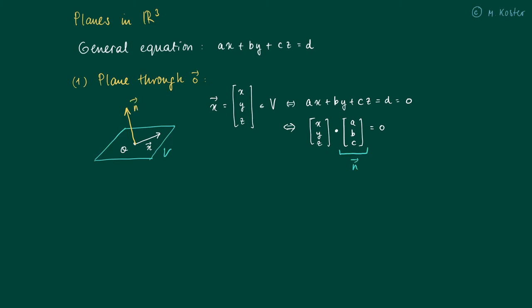If we take an arbitrary vector x in V, due to the fact that the inner product is 0 with the vector n, this vector n is pointing outwards and is perpendicular to any vector in the plane V. This characterizes the plane: vectors belong to V if and only if they have an inner product with n equal to 0.